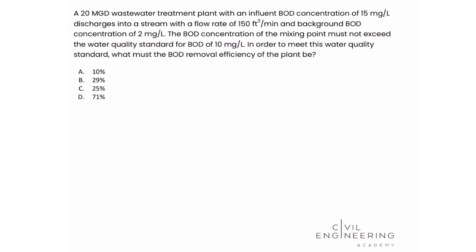A 20-MGD wastewater treatment plant with an influent BOD concentration of 15 mg per liter discharges into a stream with a flow rate of 150 cubic feet per minute and background BOD concentration of 2 mg per liter. The BOD concentration at the mixing point must not exceed the water quality standard for BOD of 10 mg per liter. In order to meet this water quality standard, what must the BOD removal efficiency of the plant be?